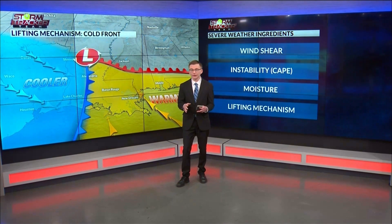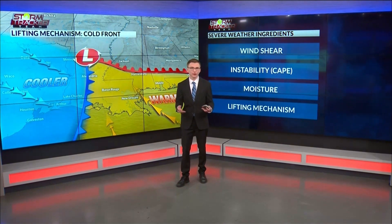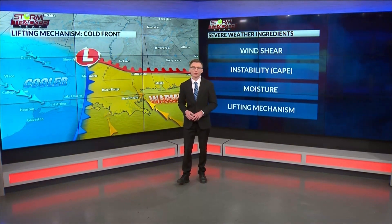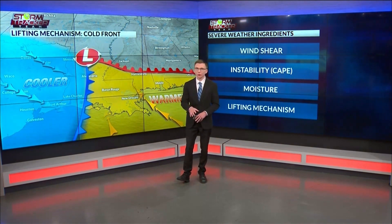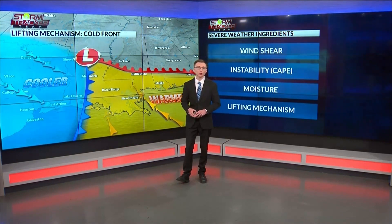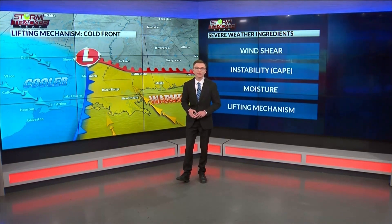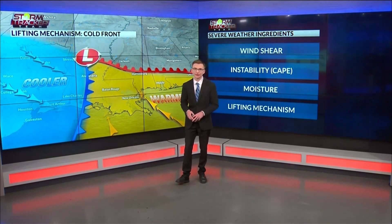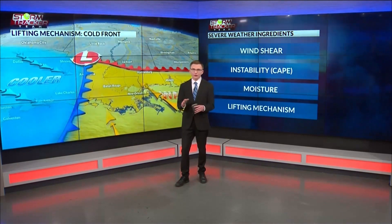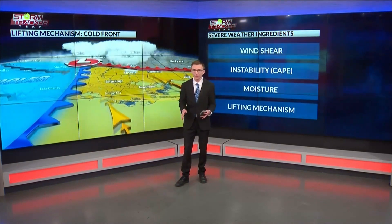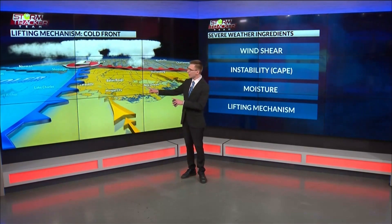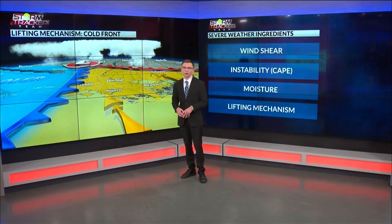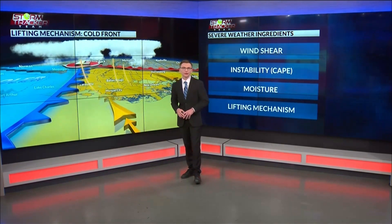Lastly, storms need a lifting mechanism to get started in the first place. For example, cold fronts or dry lines can force rising motion to spur storm development from colliding air masses. When all the ingredients come together, we forecast or locate the area where severe storms could possibly develop.